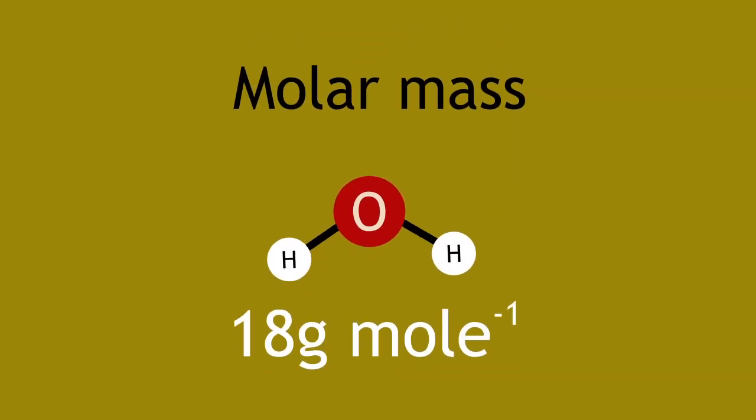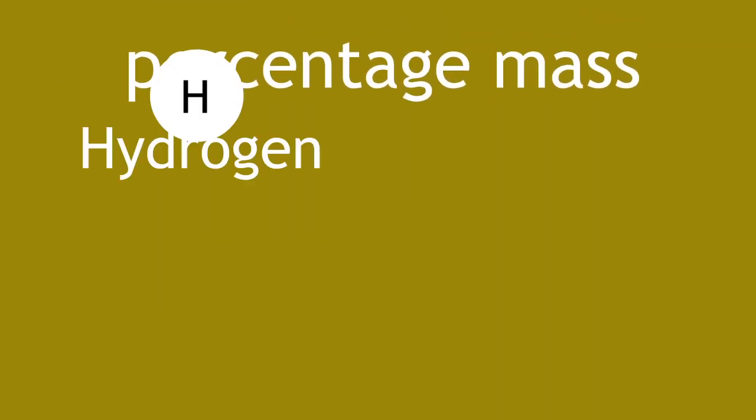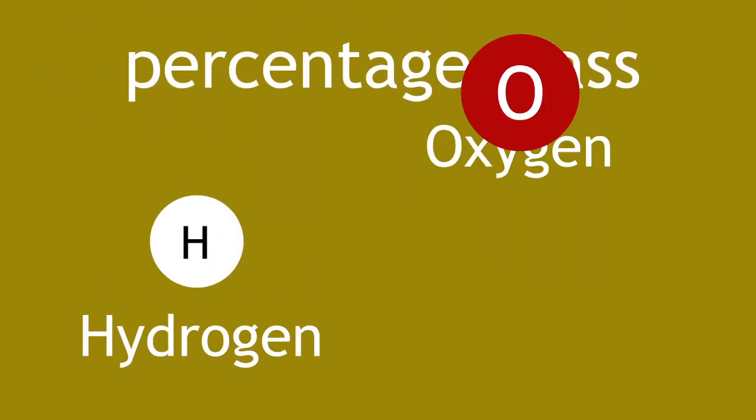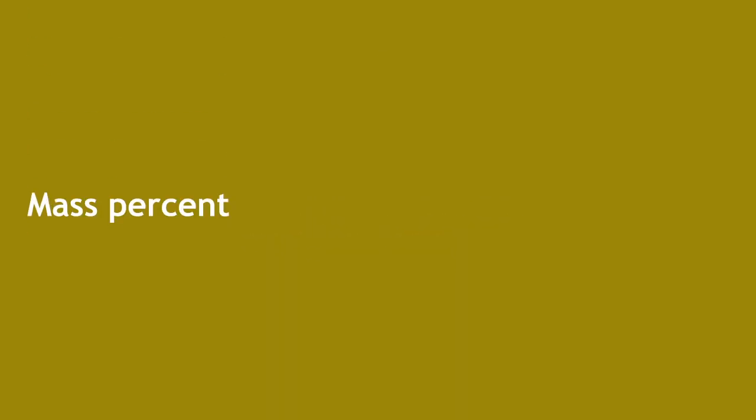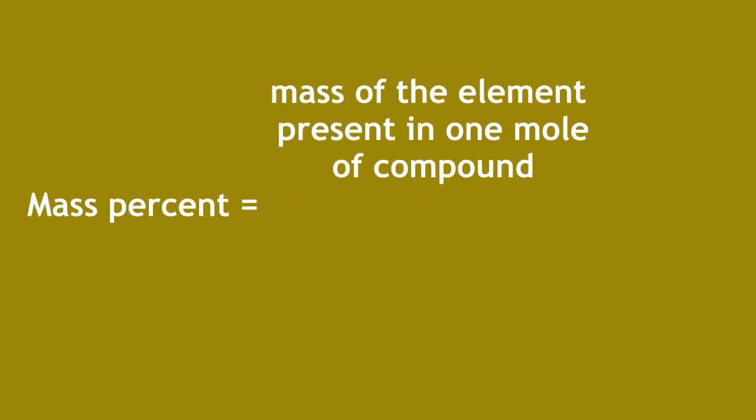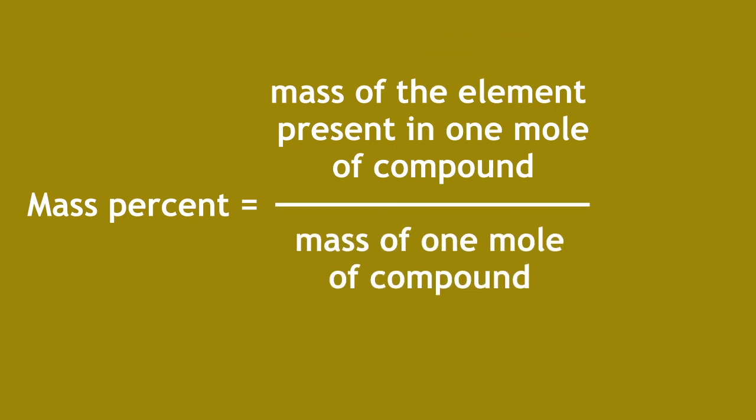Now that we know the molar mass for a water molecule, you can work out the percentage mass of hydrogen and the percentage mass of oxygen. Percent means out of 100. So, to work this out for any substance, you use the formula: Mass percent equals mass of the element present in one mole of a compound divided by the mass of one mole of that compound multiplied by 100.